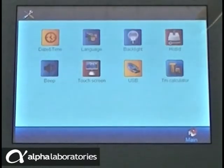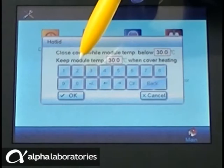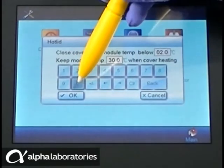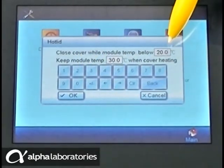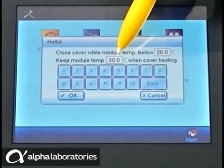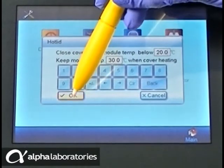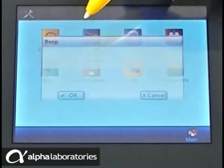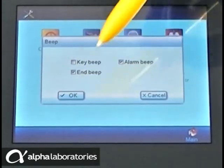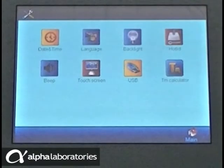The hot lid controls can be modified here. This number defines the temperature of the block below which the hot lid is switched off. The second temperature is that maintained at the start of a run before the hot lid gets to its target temperature. The audible notification beep can be switched on or off for different conditions as preferred.